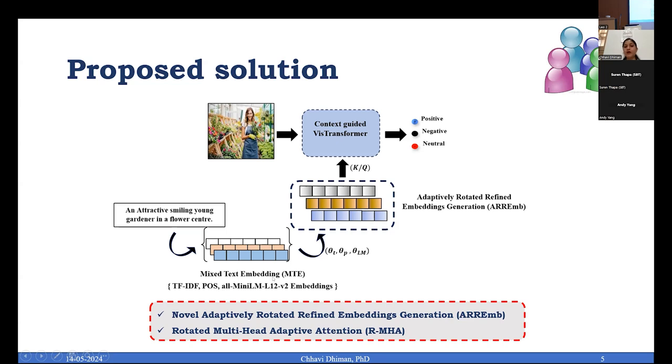Then we ensure how you can provide a discriminant, distinct representation of each word that is present in the text. We came up with adaptively rotated refined embeddings generation. For each embeddings, since they provide independent information about the text, we rotate them by a certain angle: theta of t, theta of parts of speech embeddings, and theta for language model embeddings, which are adaptively learned to ensure that losses are minimized.